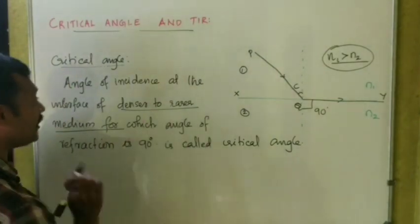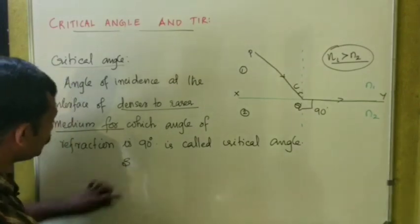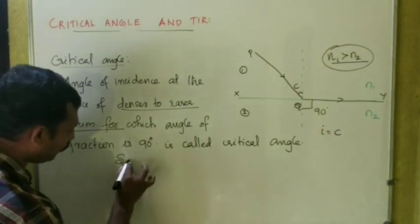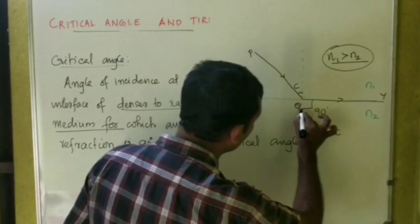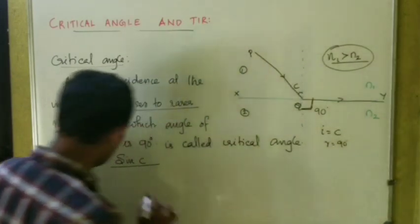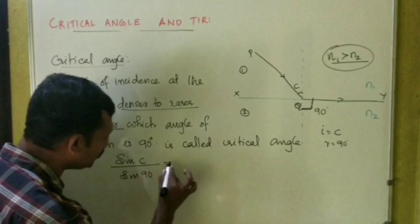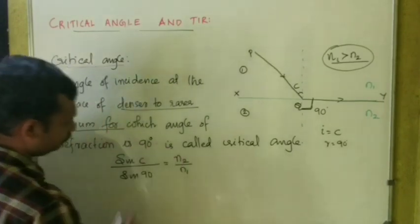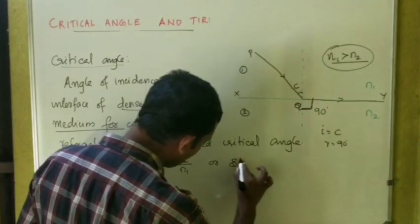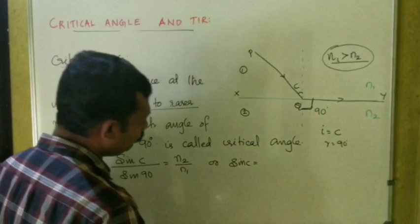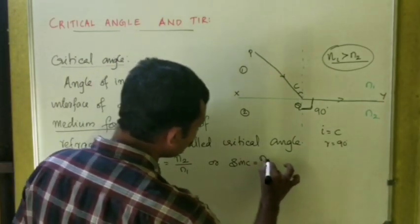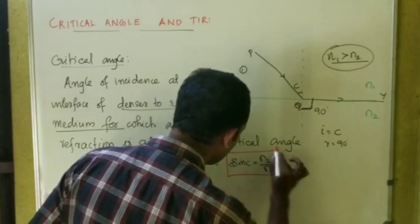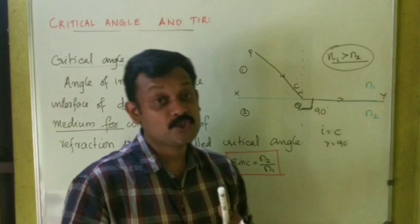Now we will apply Snell's law to derive an expression for the critical angle. Here the angle of incidence I is equal to C and the angle of refraction is 90 degrees. Applying Snell's law: sin C divided by sin 90 equals N2 by N1. Since sin 90 = 1, we get sin C = N2 / N1. This is the relation for the critical angle.